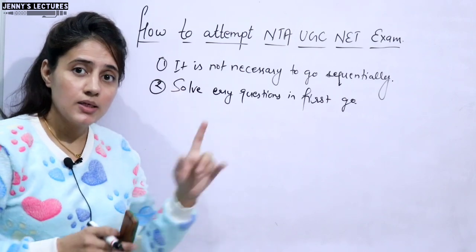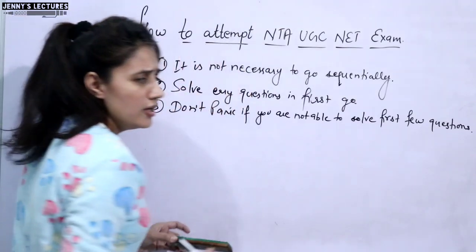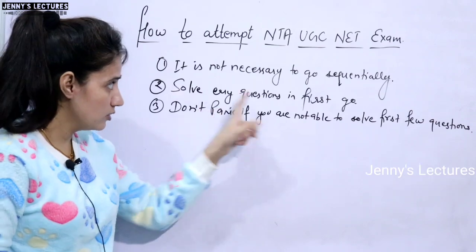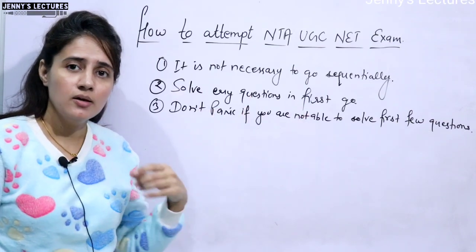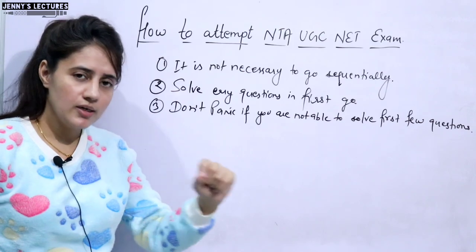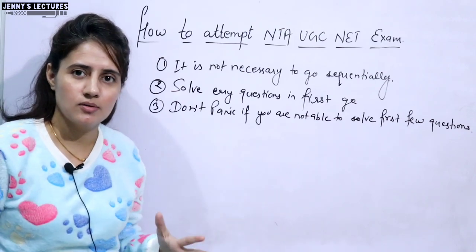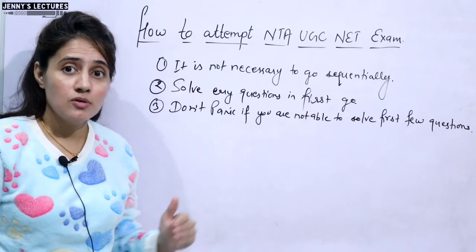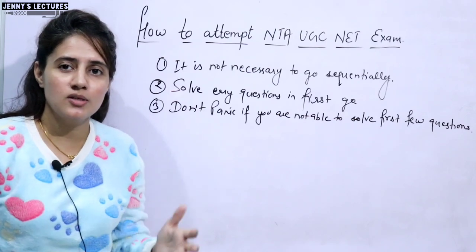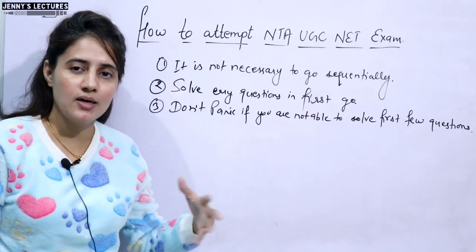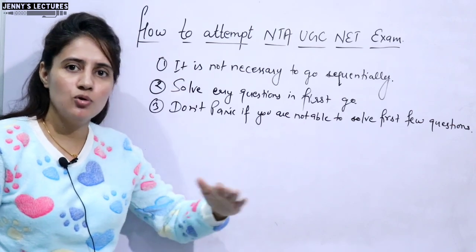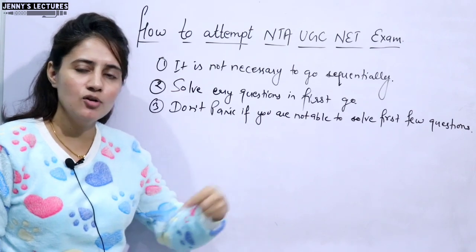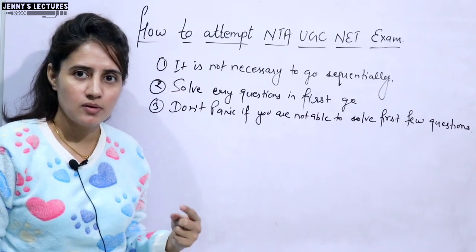The third point is: do not panic if you are not able to solve the first few questions. Easy questions means you read it and get the answer within one, two, or five seconds. But if maybe the first 10 or 12 questions don't come immediately, it's okay — you can skip them. You are not supposed to panic. In the second go you can solve those questions.